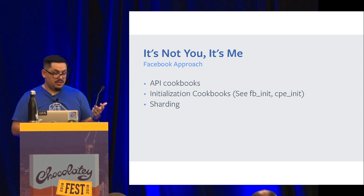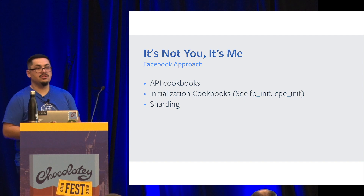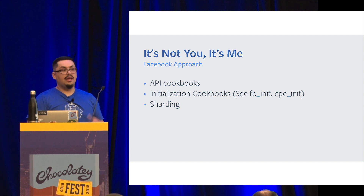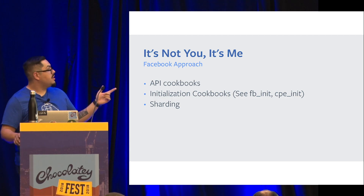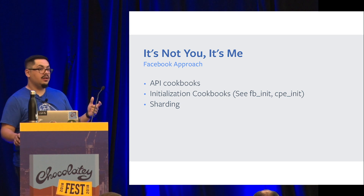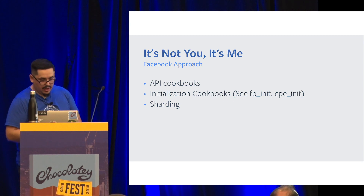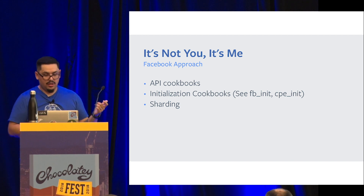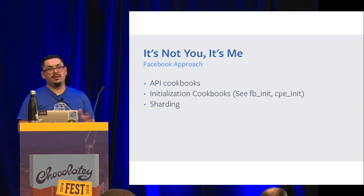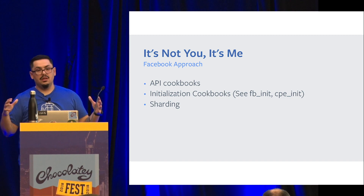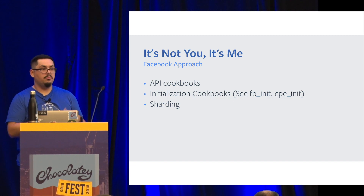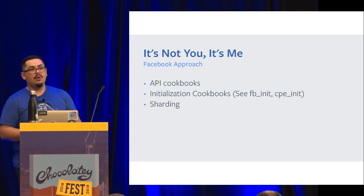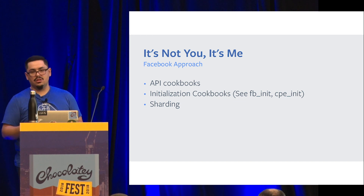The next thing is initialization cookbooks, which is essentially the way we load all our API Cookbooks and then make any customizations that we want to. The two repos I mentioned — FBinit and CPinit — will contain that, and you'll see how we do that in production and for our laptops. And last but not least, I want to mention sharding. Sharding is a way for us to take the whole set of the fleet and essentially put it into percent buckets, which allows you to roll out changes slowly over time.